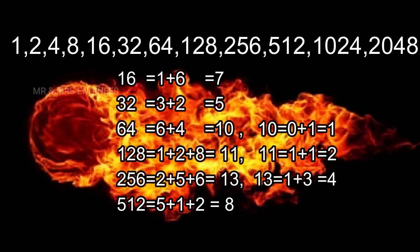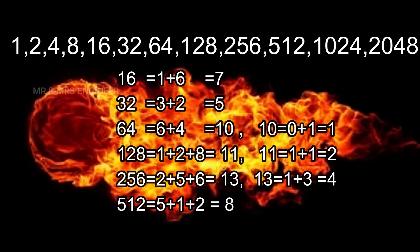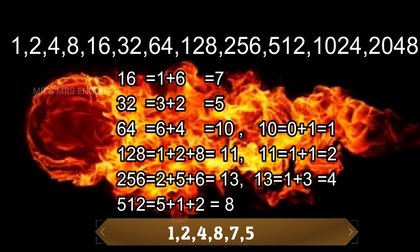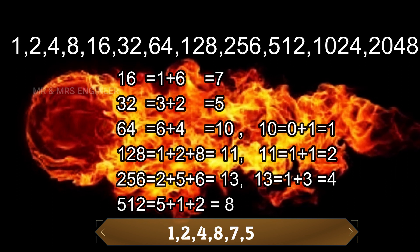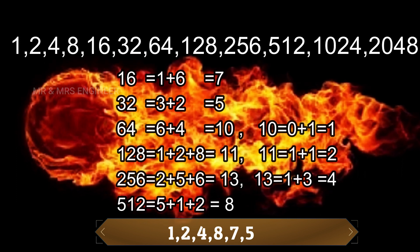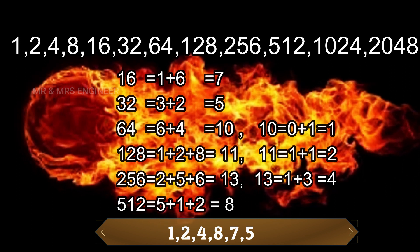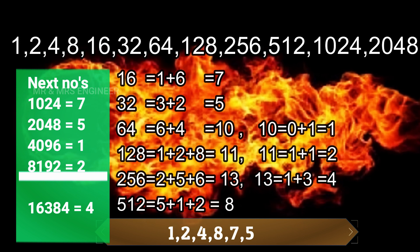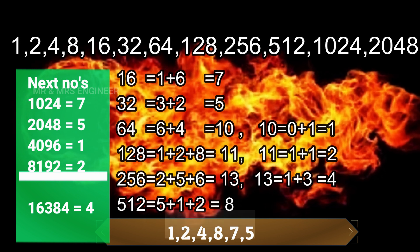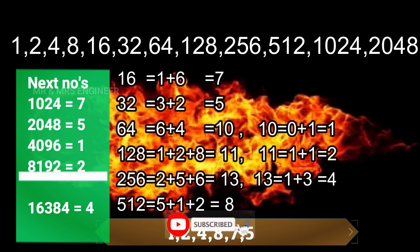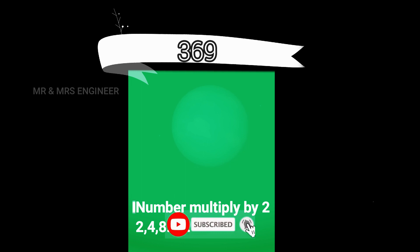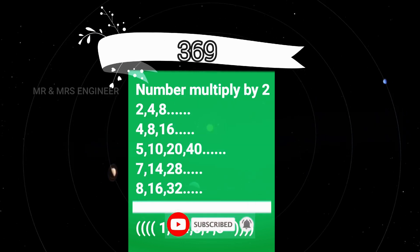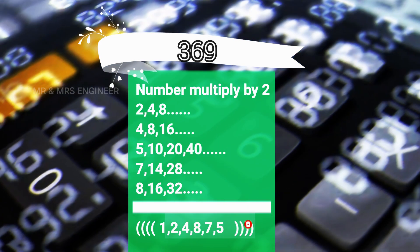Now 1, 2, 4, 8, 7, 5 — this number repeats. This is the sequence of numbers that are equal. We can tell you: if we turn out all the numbers, they are equal to 3, 6, 9, and 5.